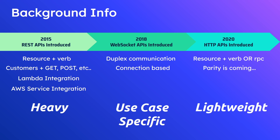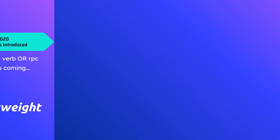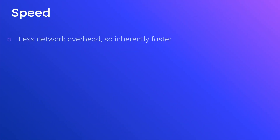Now let's look at some of the pros of using HTTP APIs over REST. The first is speed — there is less network overhead, so inherently these HTTP APIs are going to be faster. How much faster? About 60% faster at the 99th percentile, which is a pretty big improvement. Speed is one of the main benefits of using HTTP over REST APIs in API Gateway.